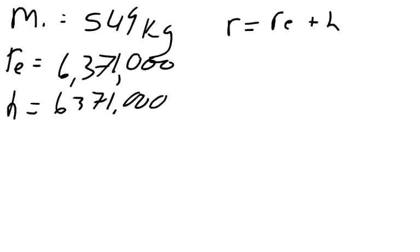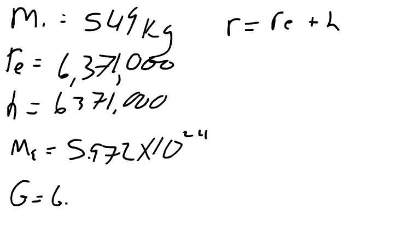And then the other thing that we know is the mass of the Earth from a previous question, so we'll call it ME, the mass of the Earth, is equal to 5.972 times 10 to the 24th. And the gravitational constant is equal to 6.673 times 10 to the negative 11th.